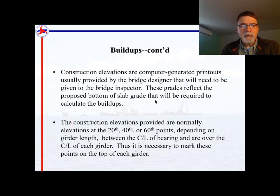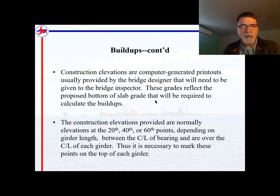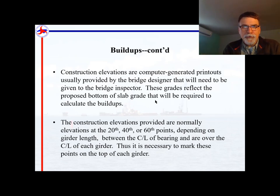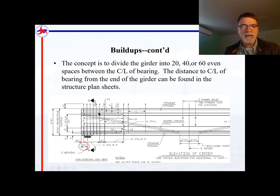The idea is to keep buildup points not too far apart, because that's where you're grading everything including your screed rail. If those points are too far apart, you can end up with a rough ride. So for a 250-foot bridge we'd divide the span into 60th points to keep the distance between buildup points from getting excessive. These points are marked on top of the girder based on the distance from centerline of bearing to centerline of bearing.